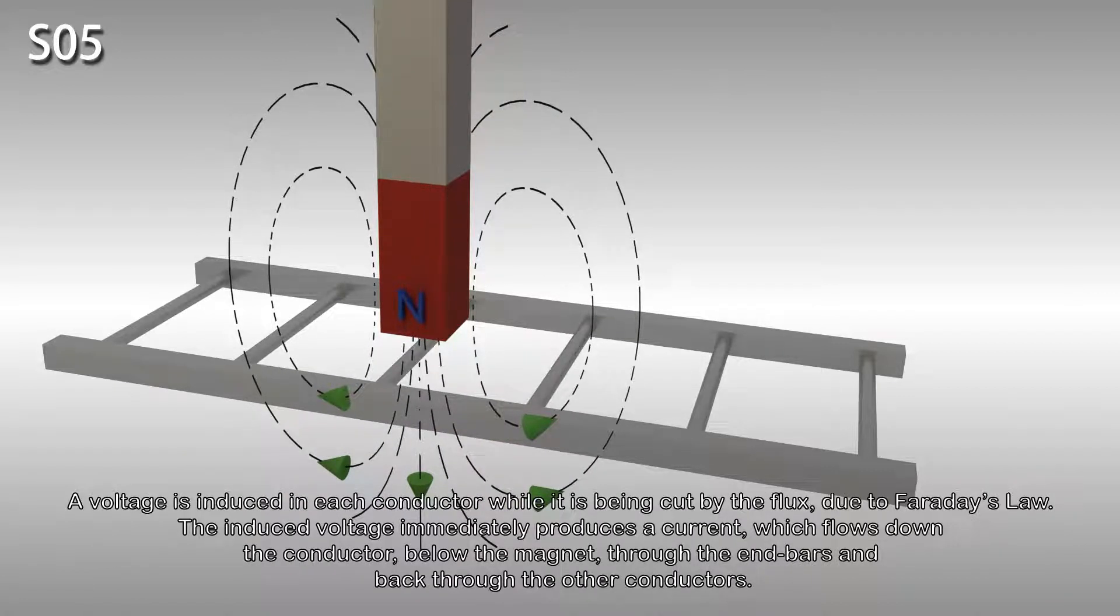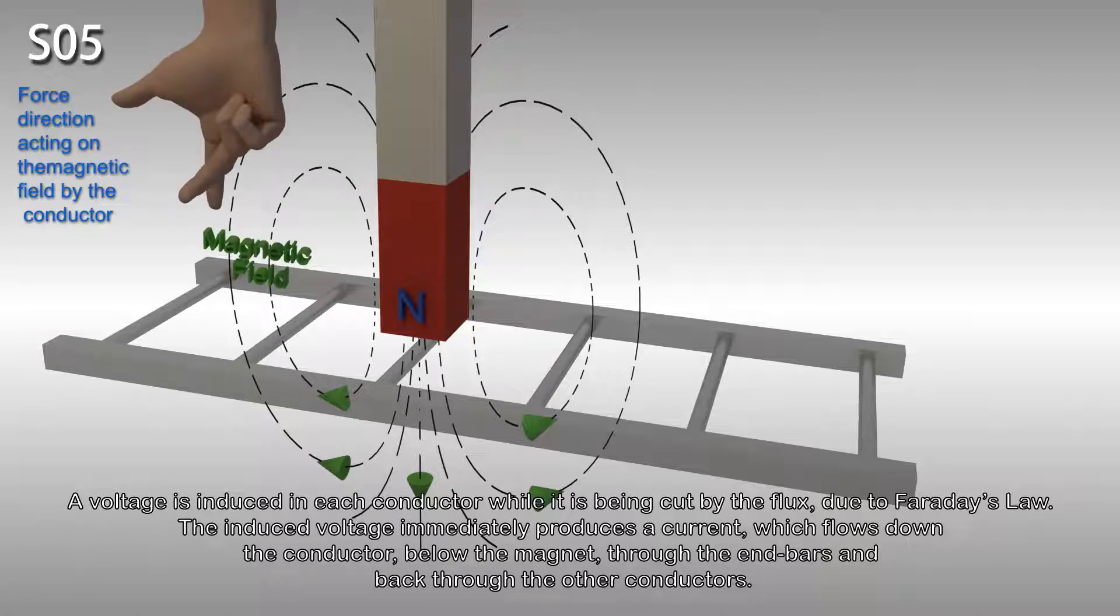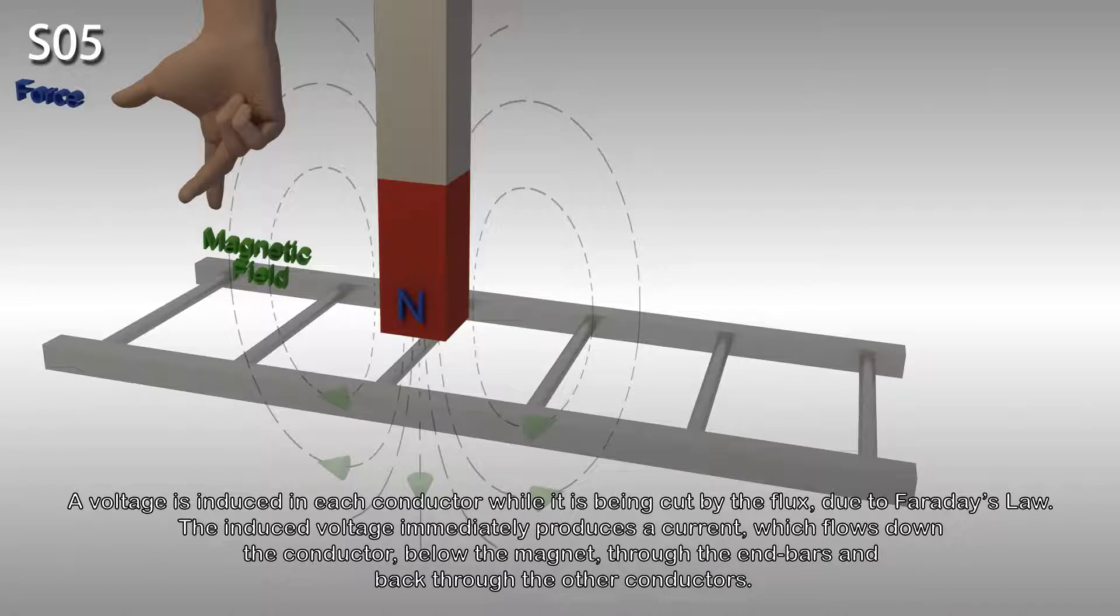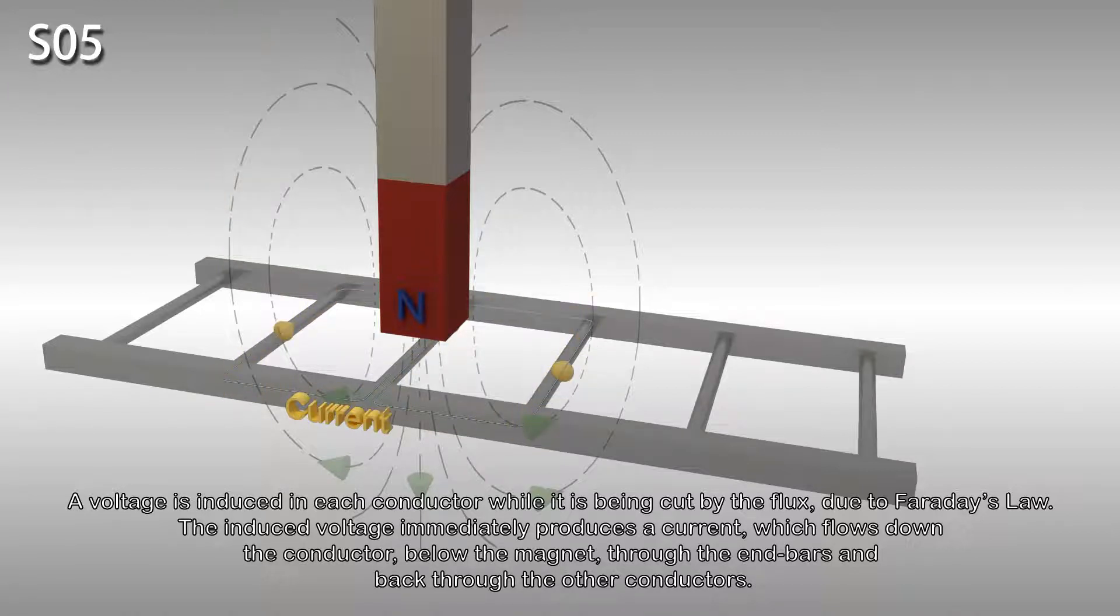A voltage is induced in each conductor while it is being cut by the flux due to Faraday's law. The induced voltage immediately produces a current which flows down the conductor, below the magnet, through the end bars, and back through the other conductors.